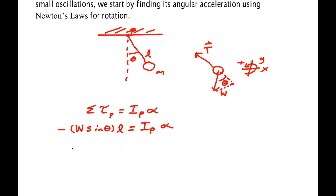I get alpha is equal to minus M G L over I_P times the sine of theta.